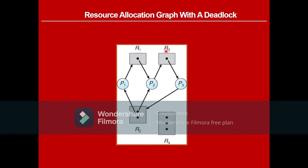P2 wants R3 but cannot have it because it is already with P3. Similarly, P1 wants R1 but cannot have it because it is already with P2. Everyone is holding an instance and wants another instance which is already with some other process. So nobody will release their resources because they are waiting for resources held by other processes — this is a deadlock.